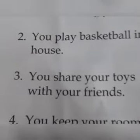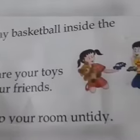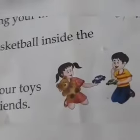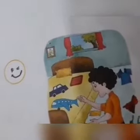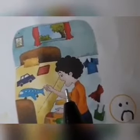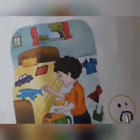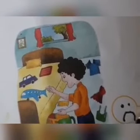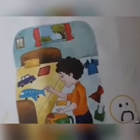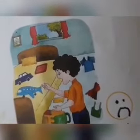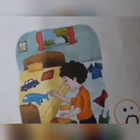Now the fourth and last one: you keep your room untidy. Untidy means throwing all the things around the room — the toys, the clothes — they are all thrown around making the room untidy. Is it a good manner or a bad manner? It's a bad thing. So we are going to draw a frowning face — the eyes and the lips turn down into a frown. Done.